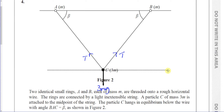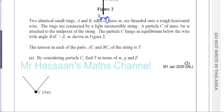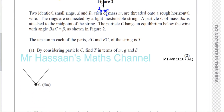Drawing a horizontal line, we can see that both string angles must equal beta. Because the drawn line is horizontal, it makes a Z-shape with the wire — alternate angles — so both angles are beta degrees. Now, considering particle C: we have the horizontal line, angle beta on both sides, tension T on each side, and 3MG acting downward.